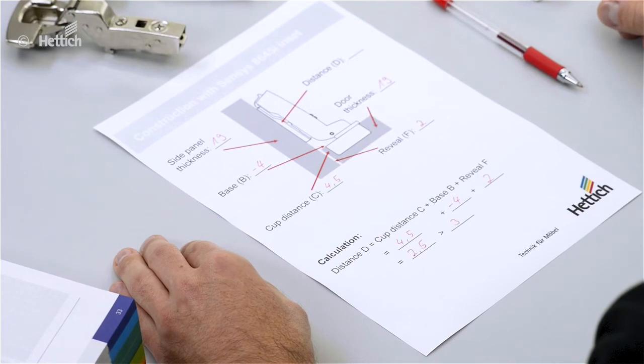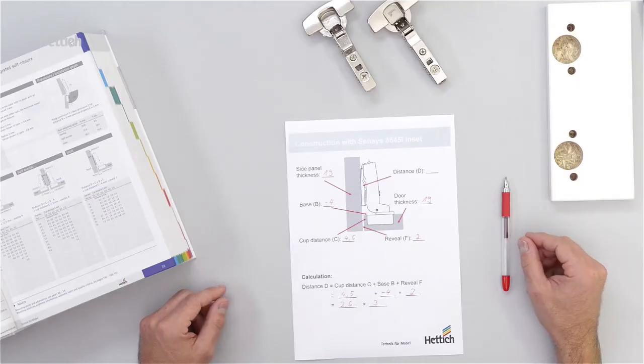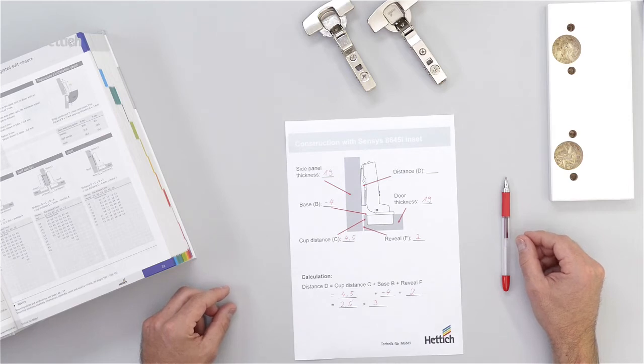The resulting difference of 0.5 millimeters has to be adjusted with the overlay adjustment screw integrated in the hinge. In the last step we have to cross-check the minimum reveal.